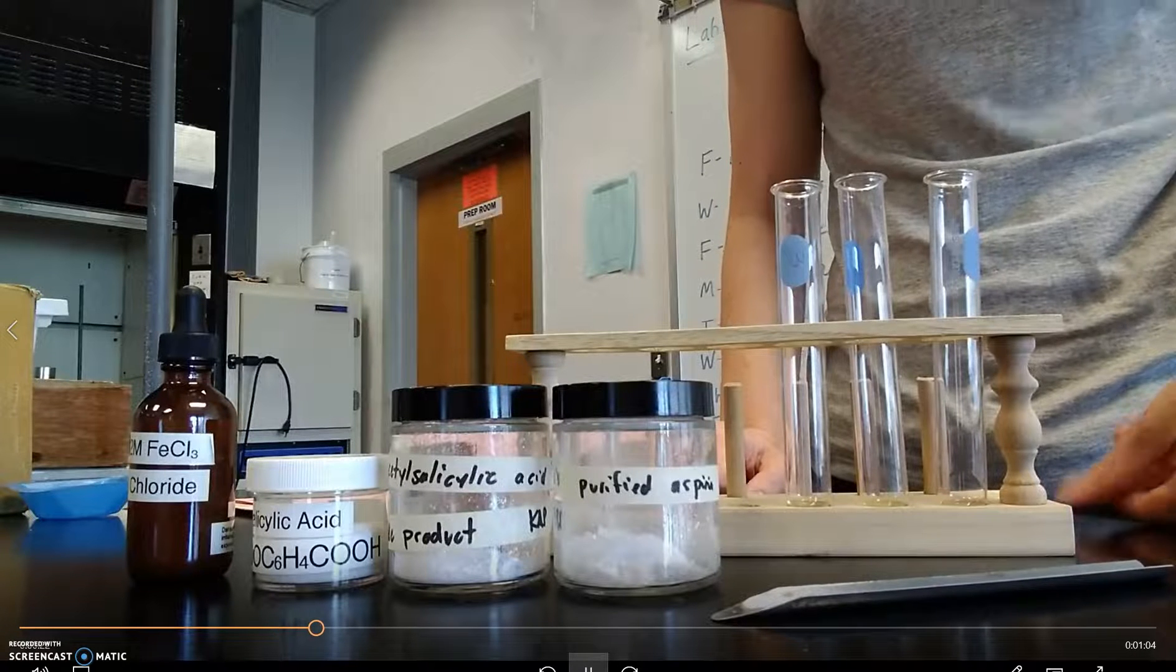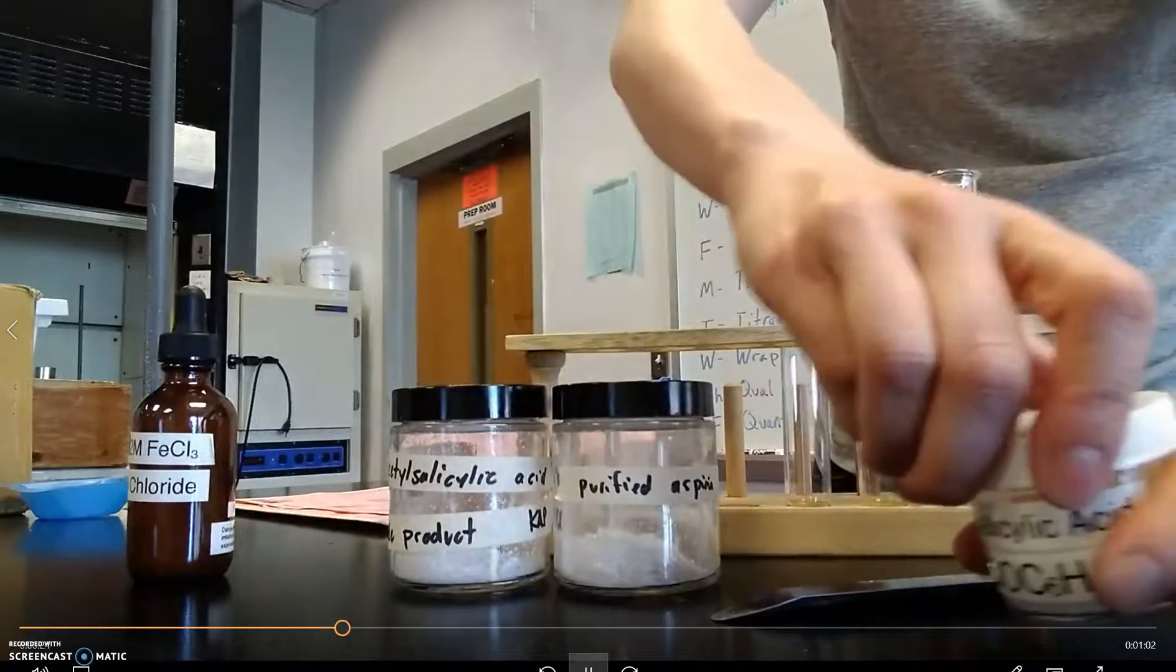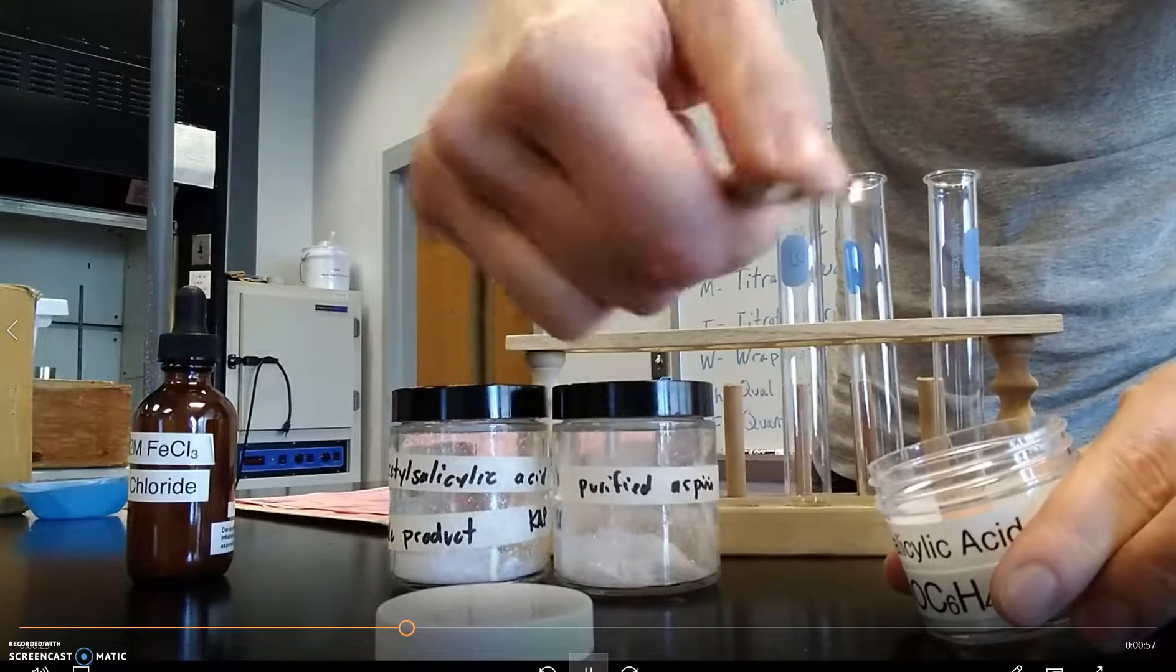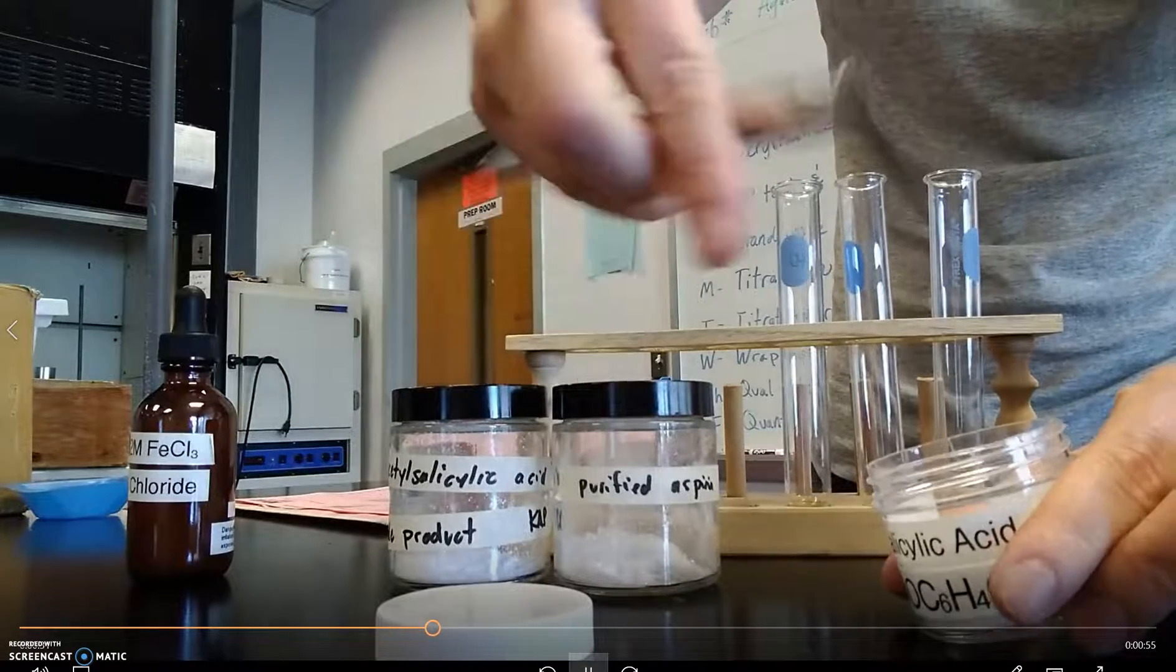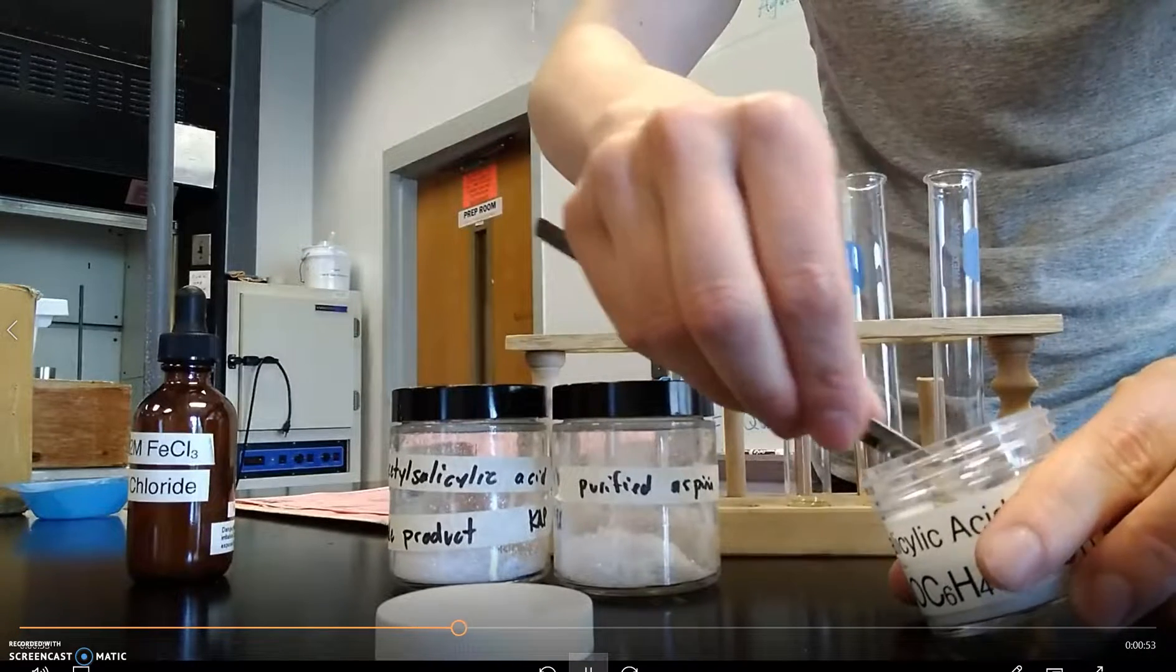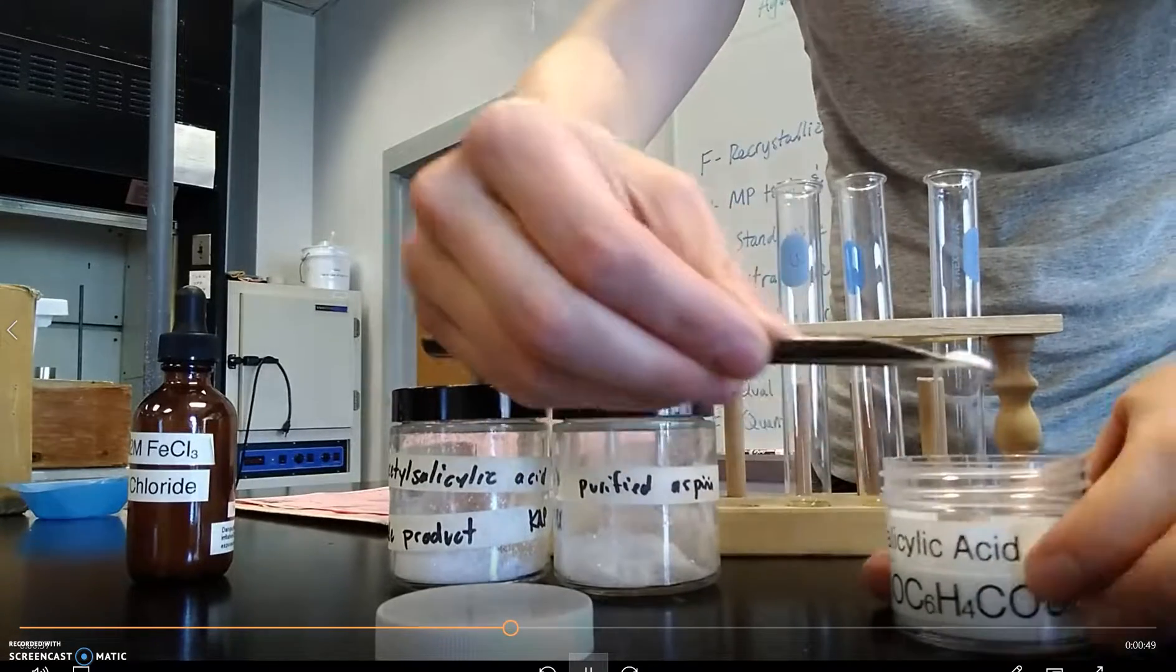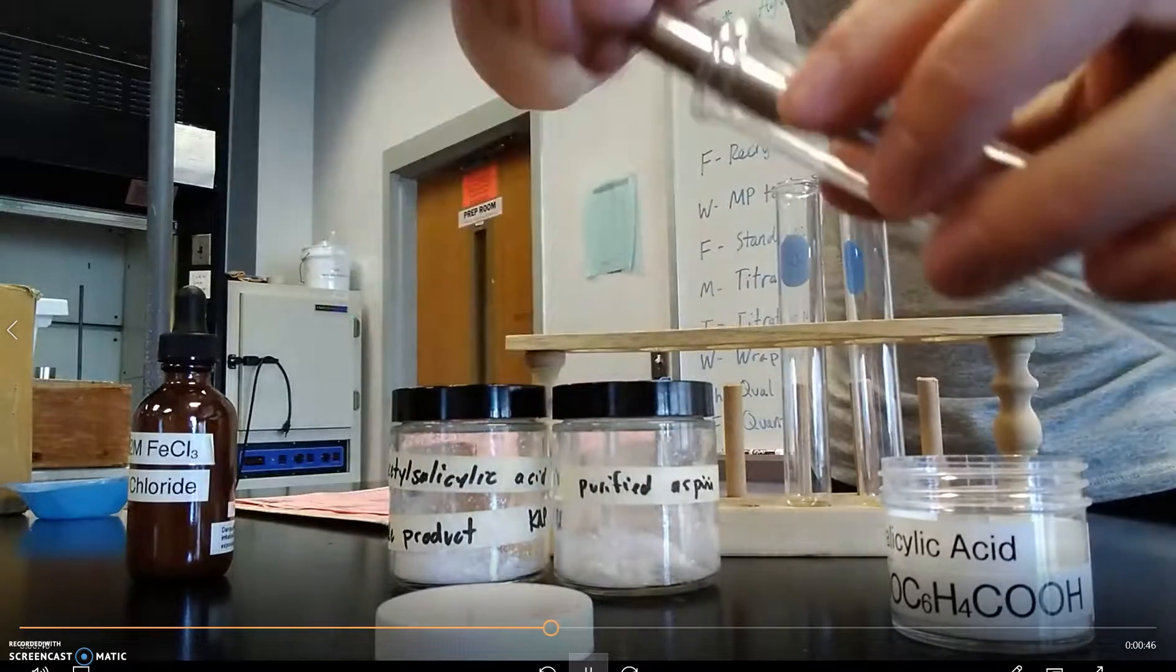So this test is qualitative in nature. We're not going to have to worry about measuring anything carefully. We'll start with this reagent grade aspirin first. You want a really small amount like the tip of a spatula. You do not need a lot of material to run this test. I probably have more than I need here.